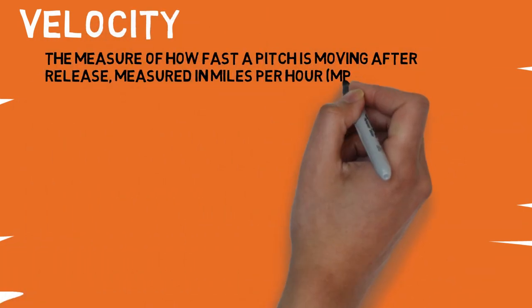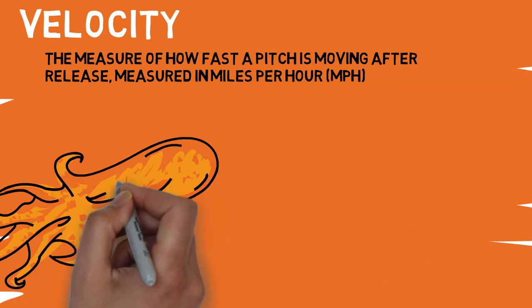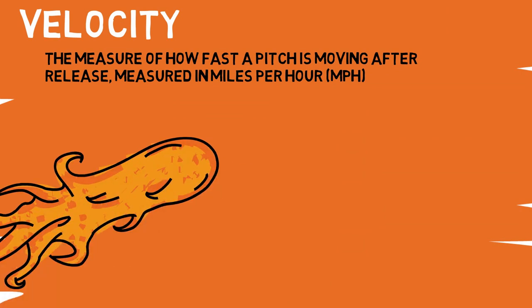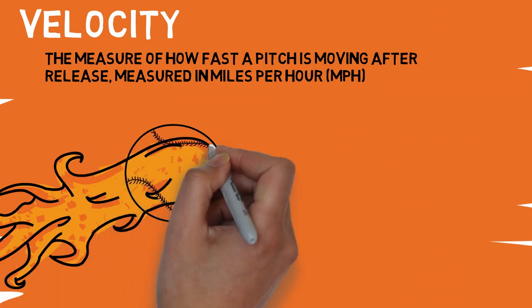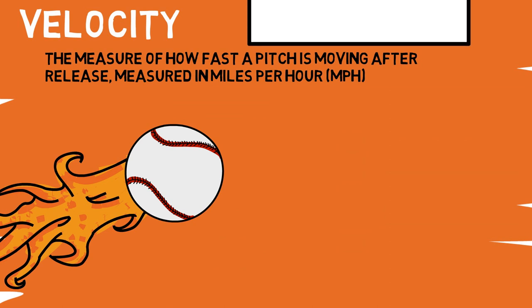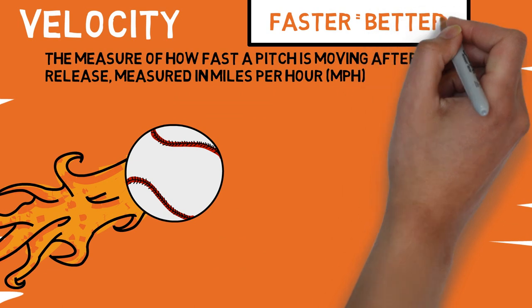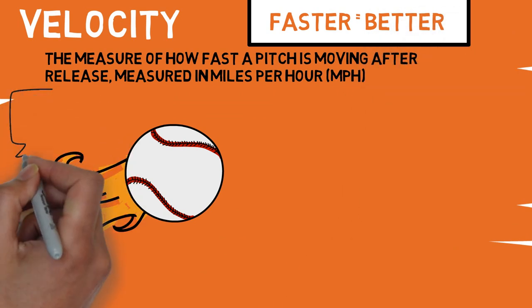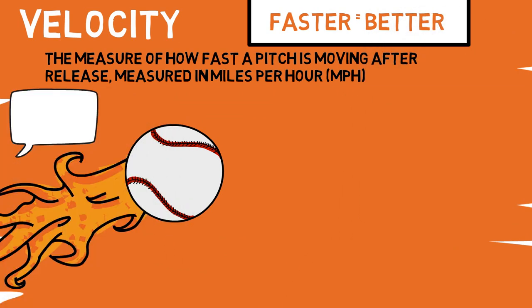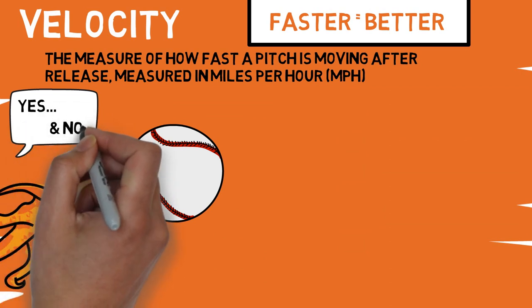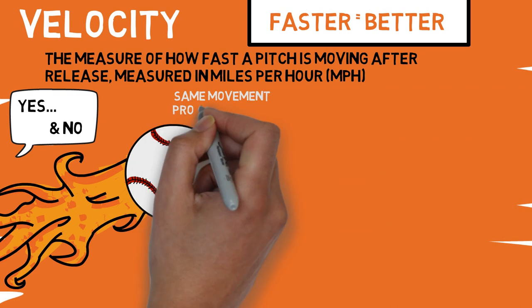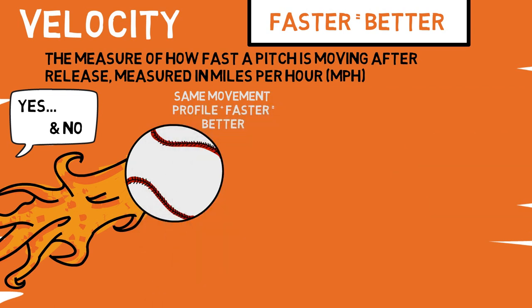Next, onto velocity, which most people are pretty familiar with before diving into the more advanced metrics we'll discuss today. Velocity is simply the measure of how fast a pitch is moving in miles per hour. When most people think of velocity, all they think about is that faster is better. To that I say yes and no. Once you're at a certain point in your career, yes — if you can throw a pitch with the same movement profile harder, that would be a better version of that pitch. But how can you get there if you're a younger athlete?